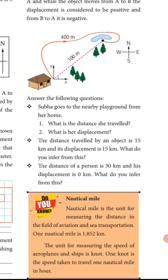Next question: the distance travelled by an object is 15 kilometers and its displacement is 15 kilometers. What do you infer from this? The answer is: if the distance travelled by an object is 15 kilometers and displacement is also 15 kilometers, both are equal, so the object travelled in a straight line.